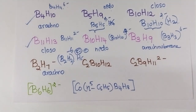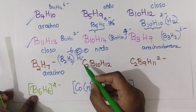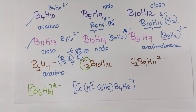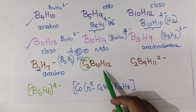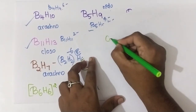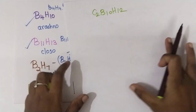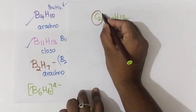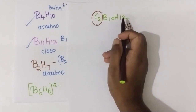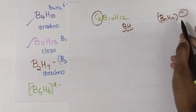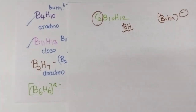We have seen boranes; now we are going to see carboranes. What are carboranes? In addition to borane, you will have carbon — this is what is known as carboranes. What you should do is convert the carbon into boron and hydrogen. The valence electron of carbon is 4 (2s2 2p2), boron is 3 (2s2 2p1), and hydrogen is 1. So 1 carbon is equivalent to 1 boron and 1 hydrogen, because 3+1=4.